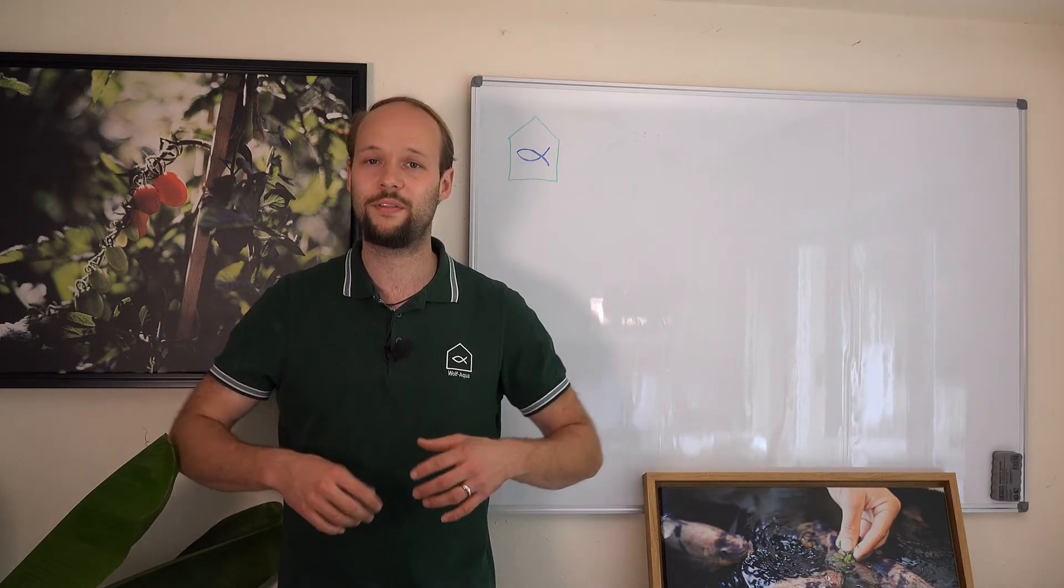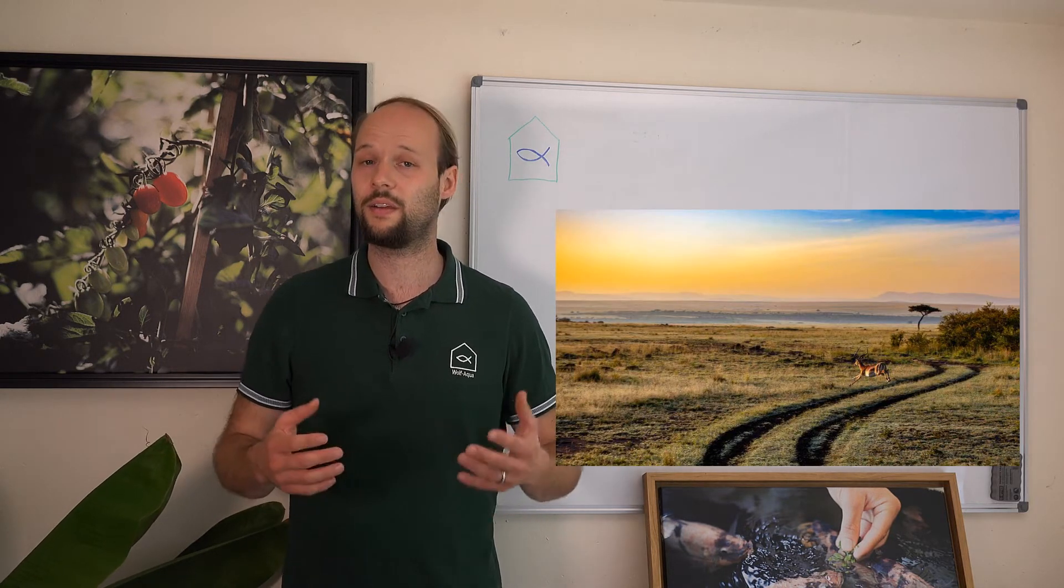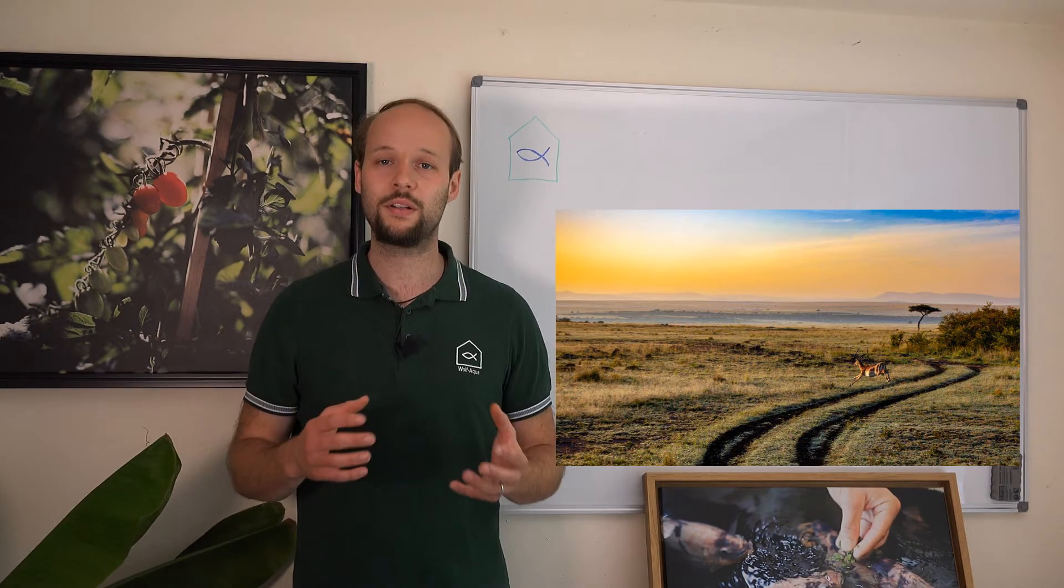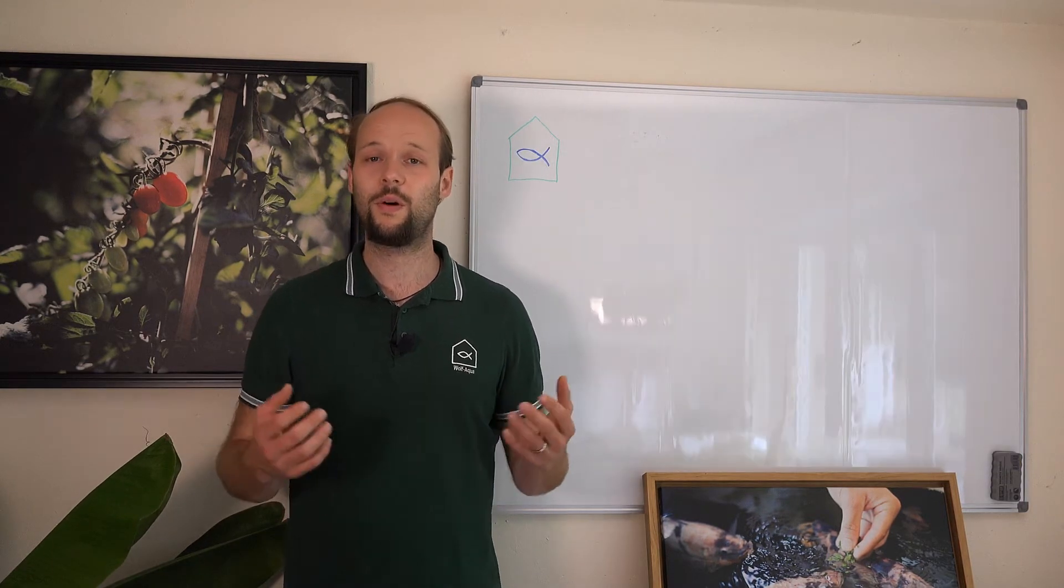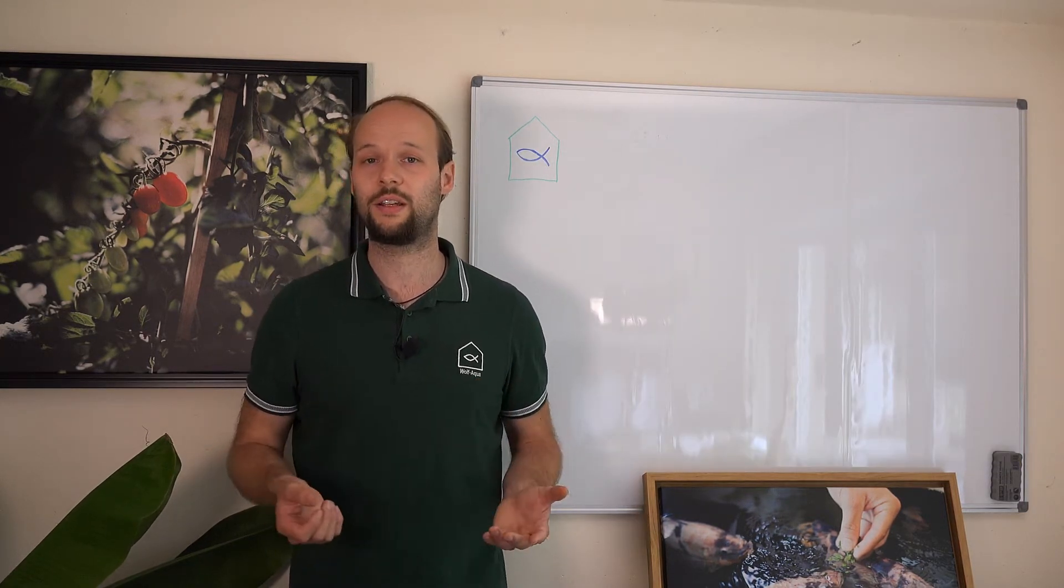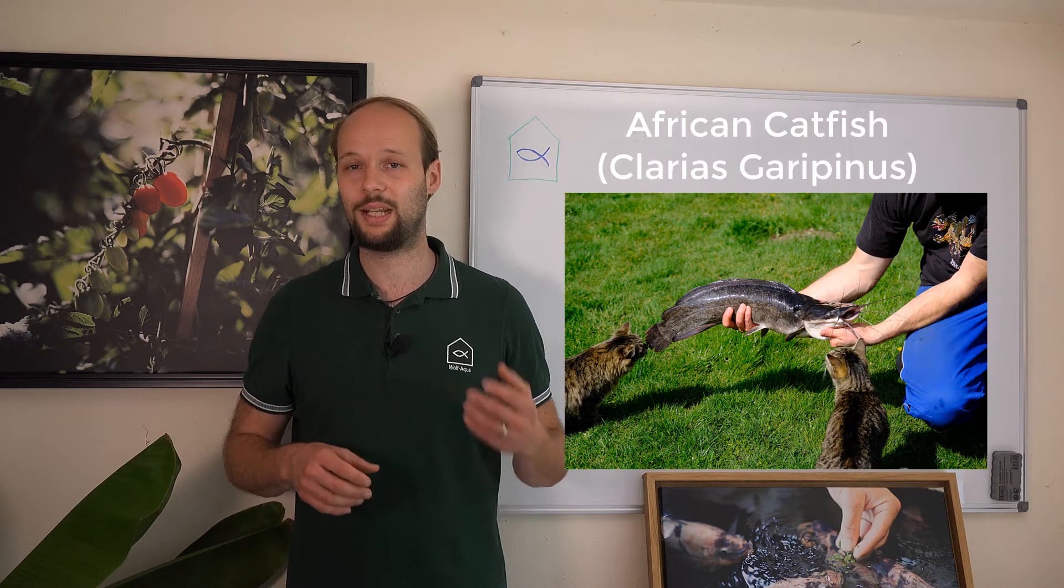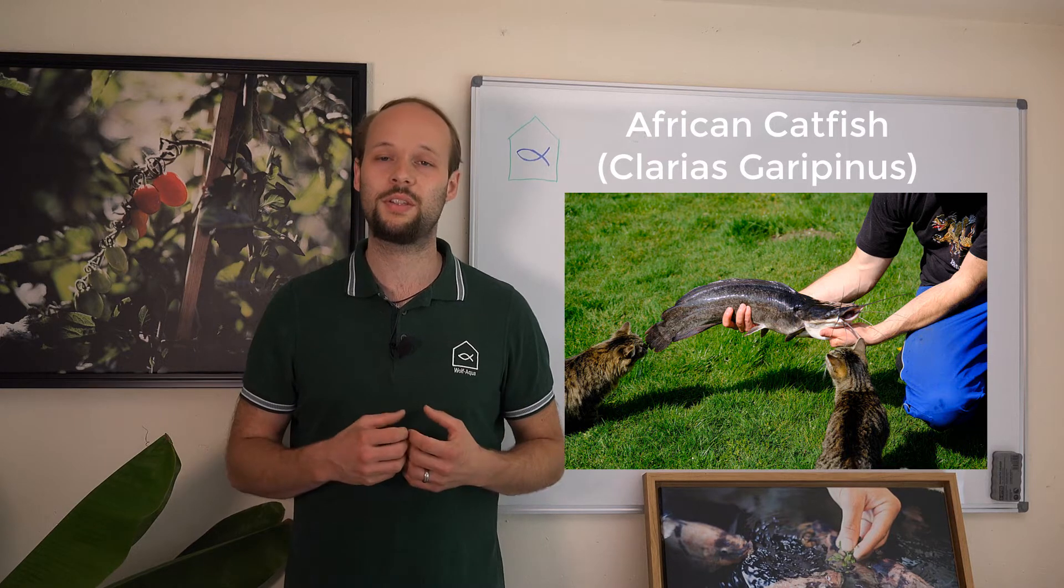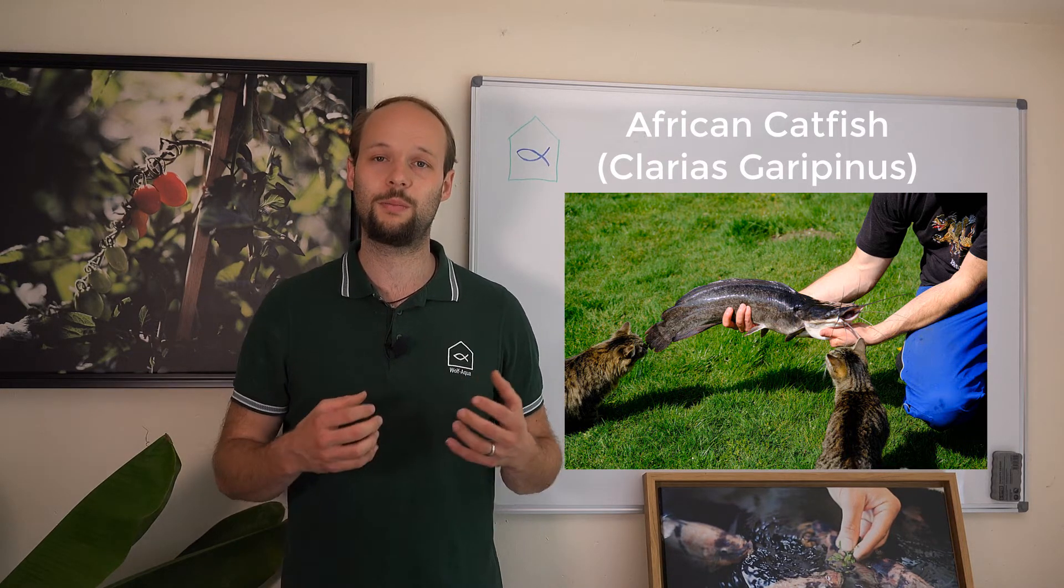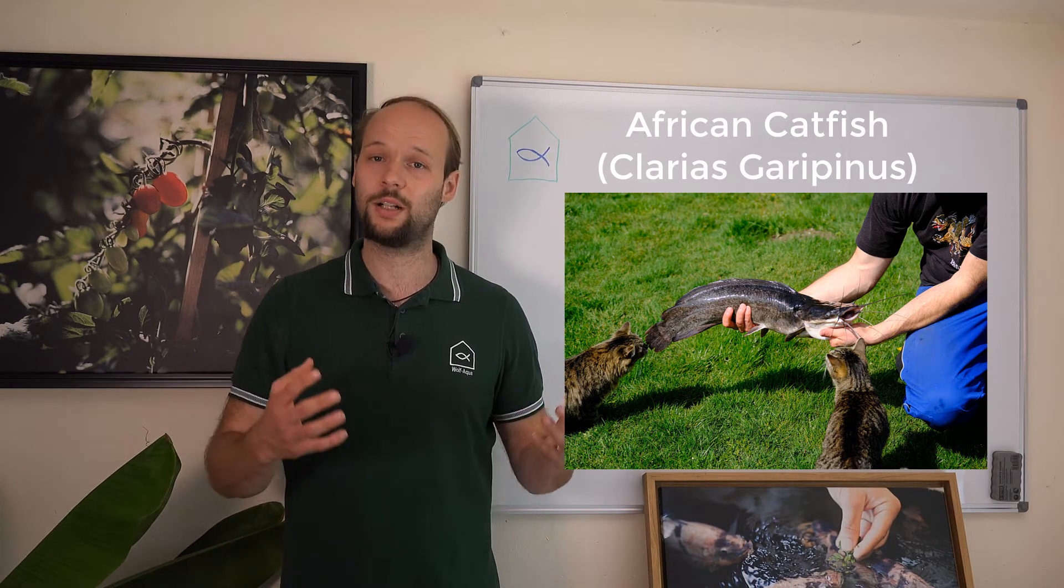As the name is indicating, the African Catfish is coming from Africa, and in Africa it is living in the big river systems and lakes. We have far more than one species of catfish living in Africa, but in this video I am going to focus on the catfish called Clarias gariepinus, so that's the Latin name of the fish, because this fish is dominantly grown here in Europe in warm water recirculation aquaculture systems.